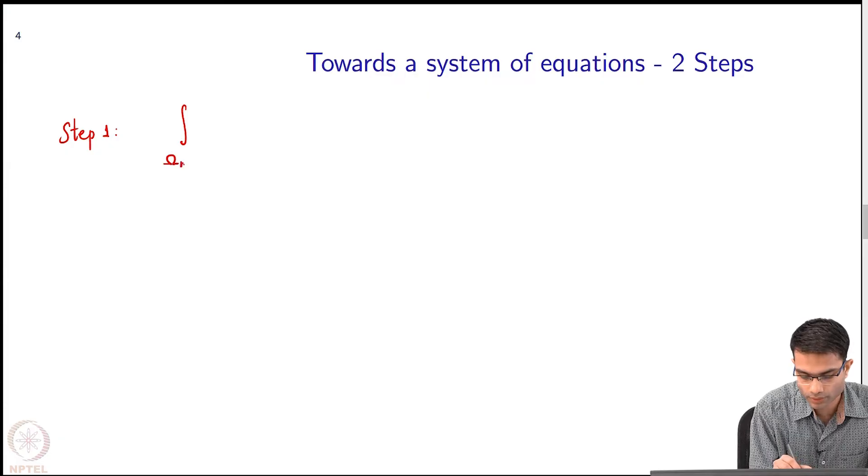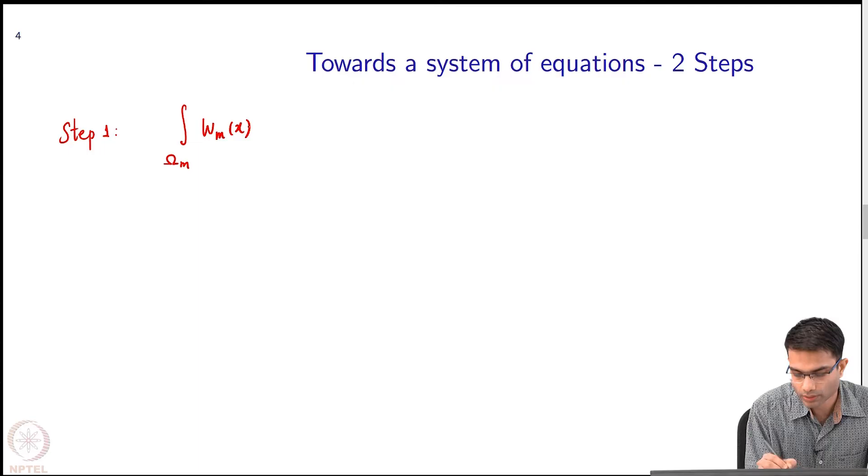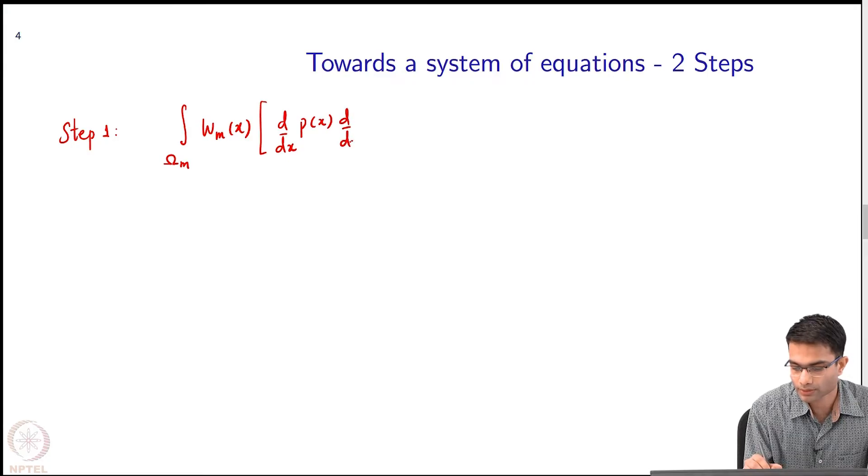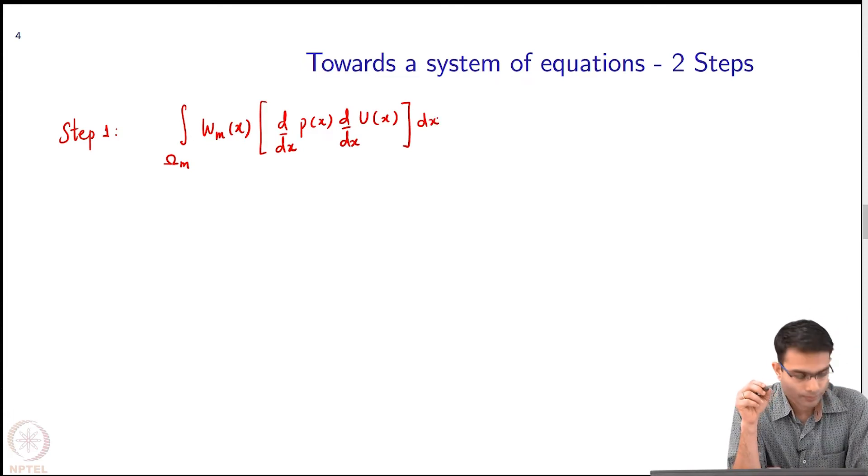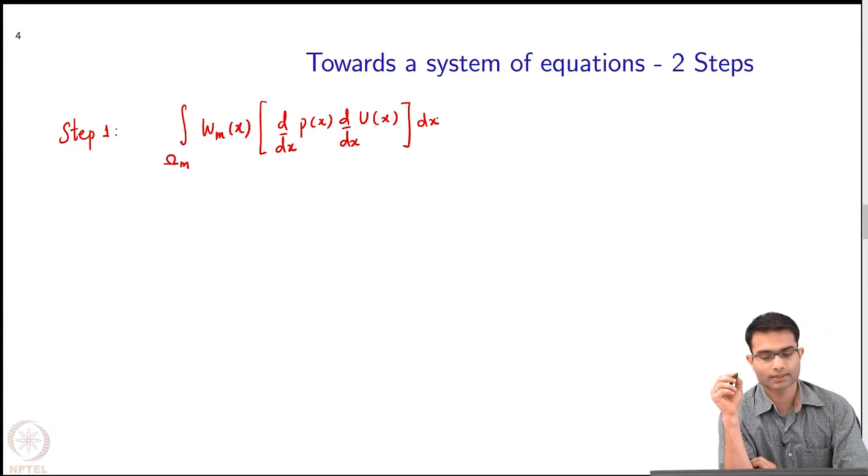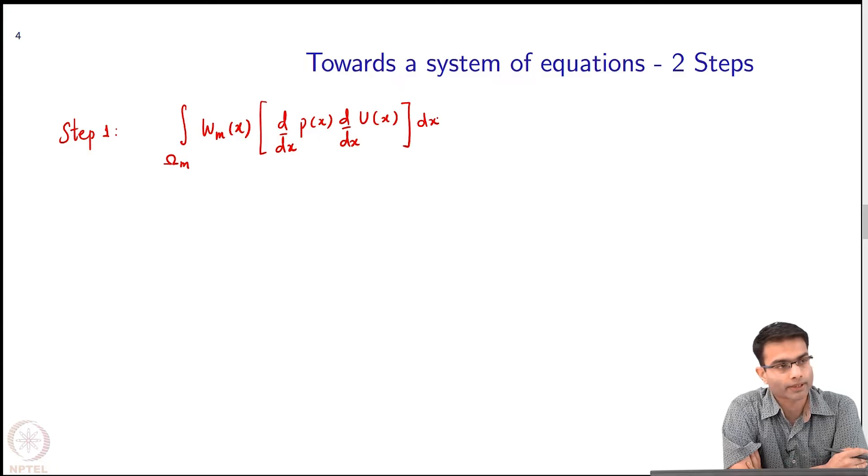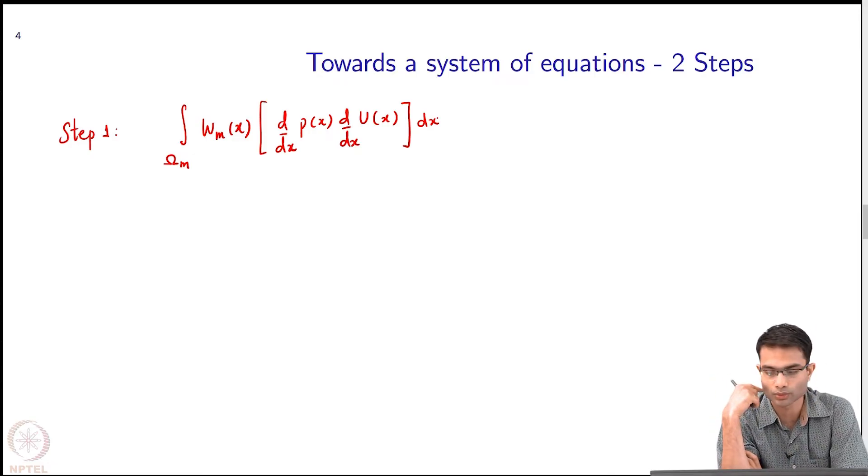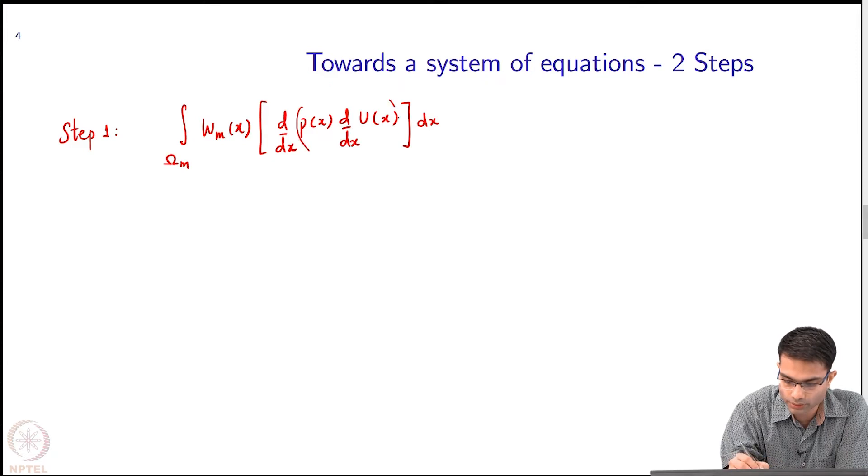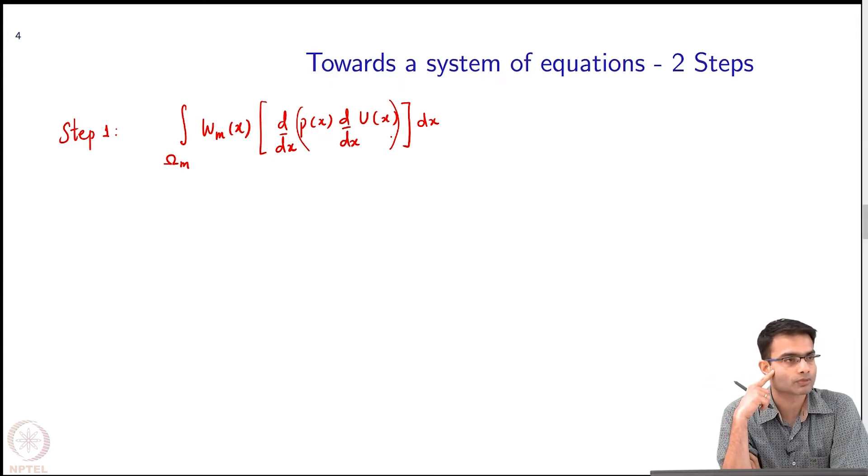I have an integration over the domain of WM(x) and this first term is d/dx, there is a p(x) d/dx of u(x). I am just writing only the first term. Looking at this, is there some simplification you can think of? Because right now if I open this up, I am going to get a derivative of p and a second derivative of u. Second derivatives, of course, given a choice you would rather not have to deal with higher order derivatives, better to deal with lower order derivatives. Looking at this form, what does it tell you? It is d/dx of this whole thing. Is there any trick that comes to mind?